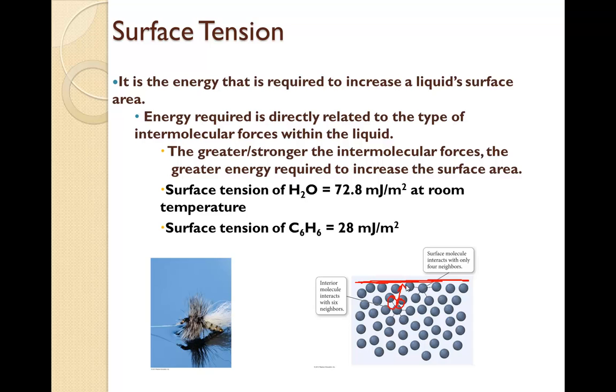To give you an example, H2O has hydrogen bonding. It takes 72.8 millijoules per meter squared at room temperature to break that surface tension, whereas benzene here only has dispersion forces or van der Waals forces and only takes 28. Because the van der Waals forces are so much less than hydrogen bonding, it's going to take less energy to break that surface tension.